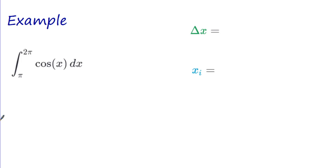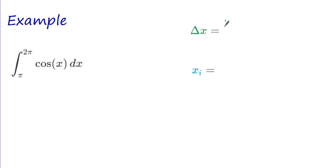We want to find the definite integral of cos(x) dx from π to 2π. Now, I know you know how to compute that integral — it's sine(x) — and you can plug in sine(2π) minus sine(π). But we want to look at what the definition of the definite integral is as a limit of a Riemann sum. Delta x equals b minus a over n, which is 2π minus π over n = π/n.